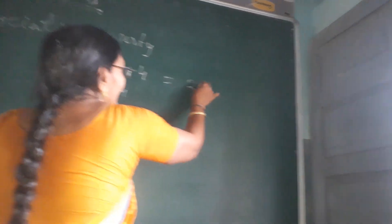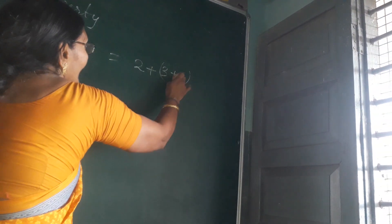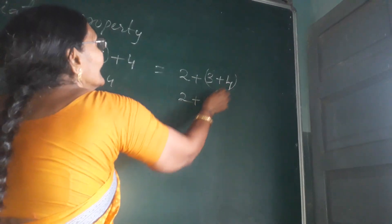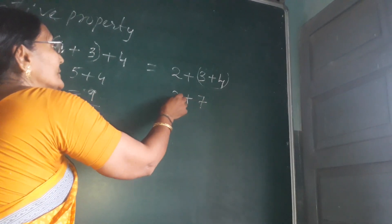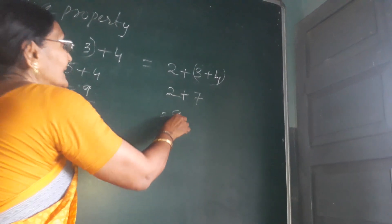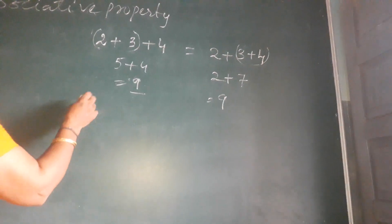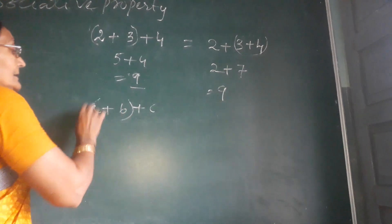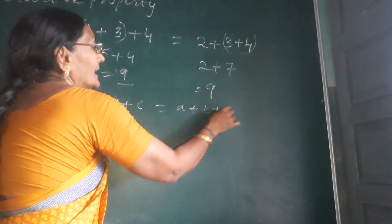Same number — now if I group three and four first: three plus four is seven, and seven plus two is also nine. So the same answer comes. In associative property of integers, no matter which group you add first, the answer will be the same.